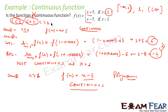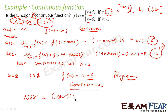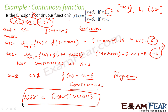We have proved before that a polynomial function is always continuous because the limit exists and the limit equals f(c) as x tends to c. So the whole function is continuous at all points except at c=1. Since a function must be continuous at all points to be a continuous function, even one point of discontinuity means it is not a continuous function.